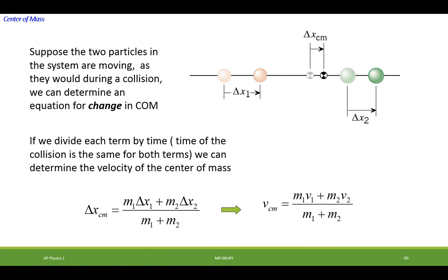Now, we could divide each of these delta x's by the corresponding time. And the time is going to be the same because the collision occurred for the same amount of time. And we know that distance divided by time is velocity. So each of these terms can be turned into a velocity. So this would give us the velocity of the center of mass.